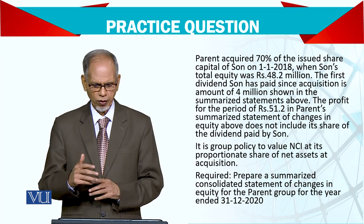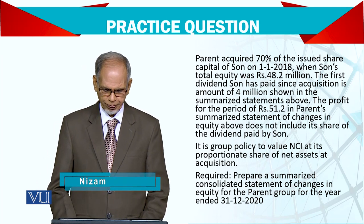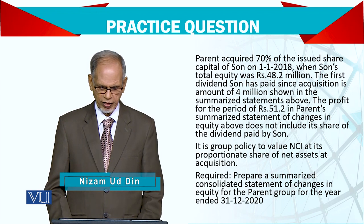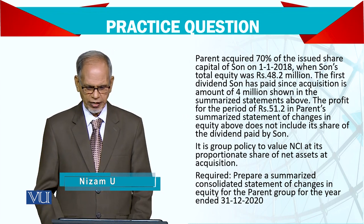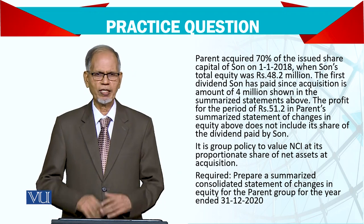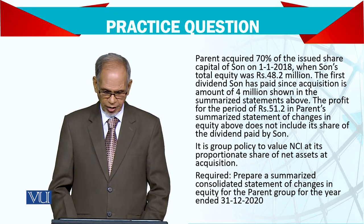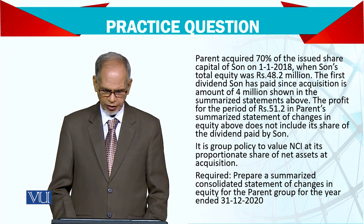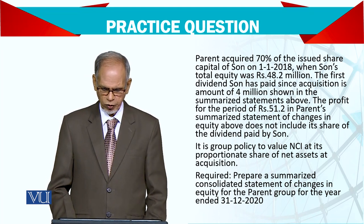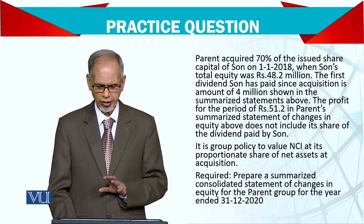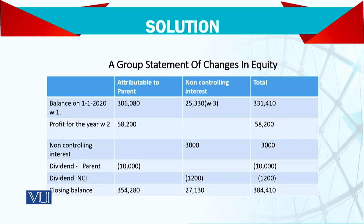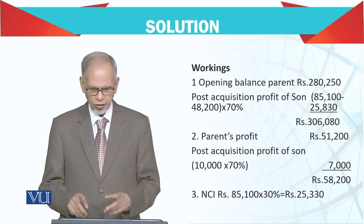Again, we will work out from the profit — what is the NCI's portion and what is parent's portion — in parent's summarized statement of change in equity. It does not include its share of dividend paid by son. The requirement is simple: prepare summarized consolidated statement of change in equity. We need to find the opening balance working, profit working, NCI portion, and dividend portion.